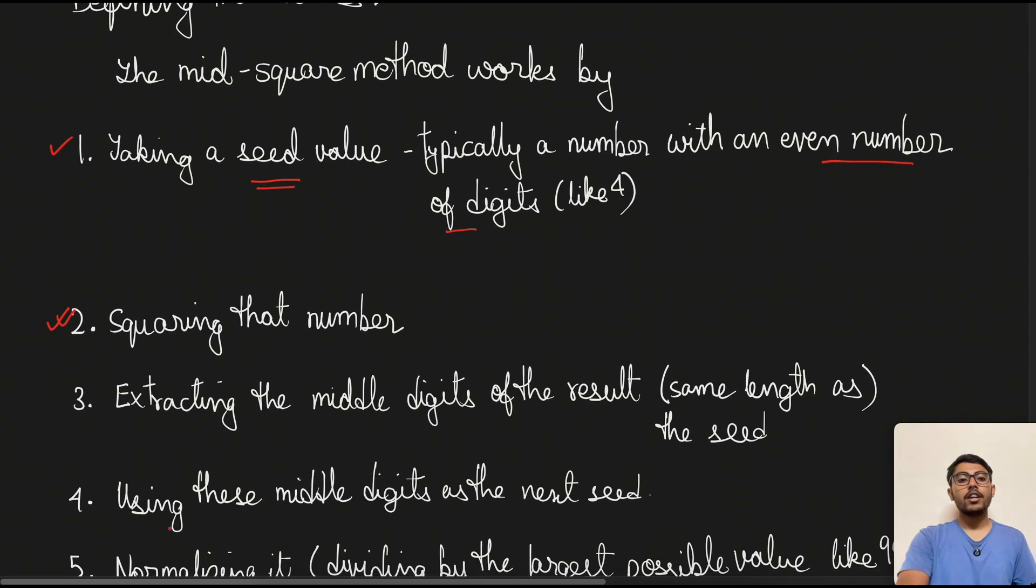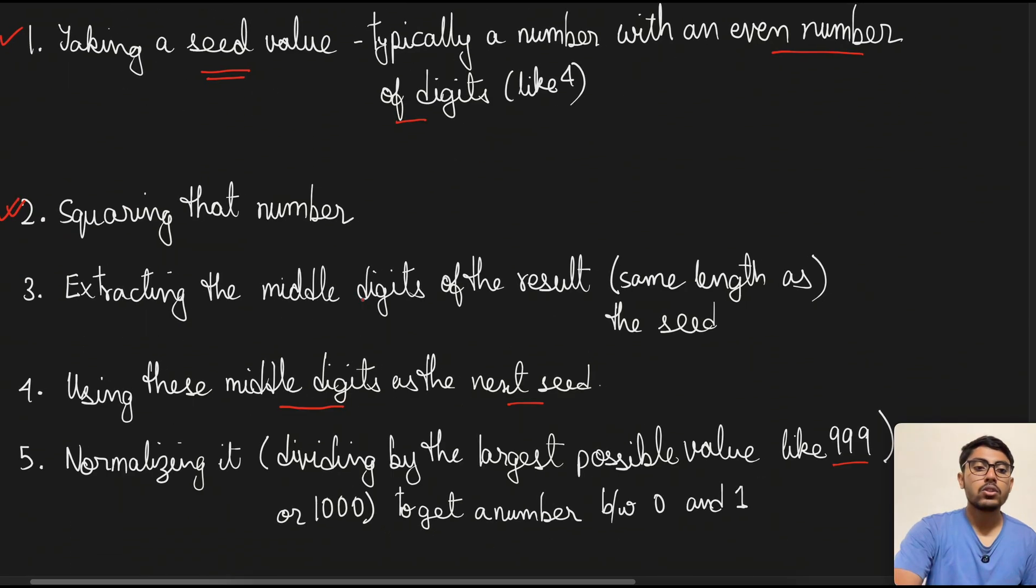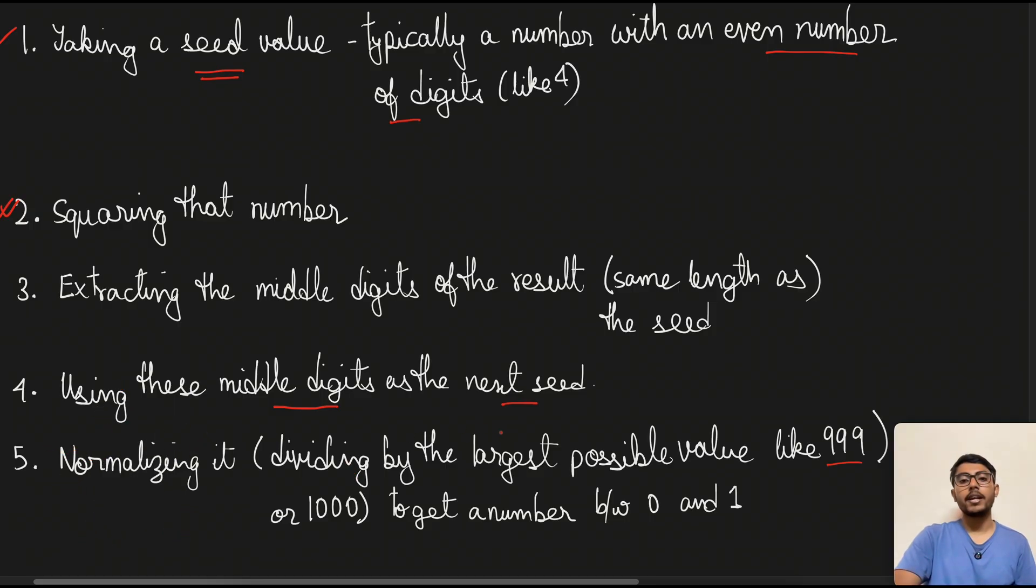Step 4: using these middle digits as the next seed. So the seed which we take in the first instance is something we take by random choice or given in the question, but from the next time we use the seed which we get as the middle digits of the initial squaring result. So the fifth step is normalizing it, dividing by the largest possible value like 999 or 1000 to get a number between 0 and 1. It totally depends upon what is the digit count for that one, how many digits we get in the seed.